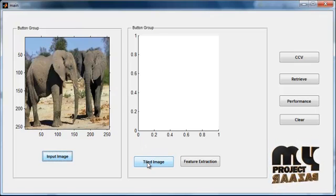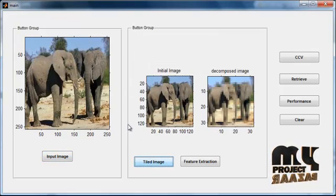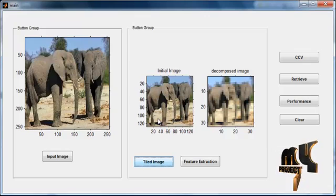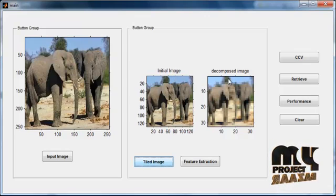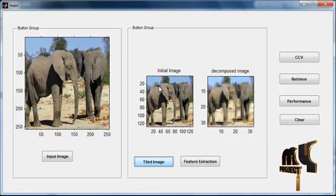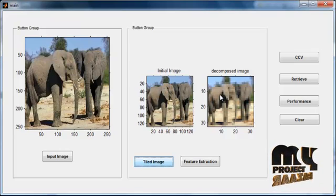Then click the button tiled image. After clicking the button tiled image, the input image and the decomposed image are shown in axis 2. The first one represents the input image, that is the query image. Then the second image represents the decomposed image.